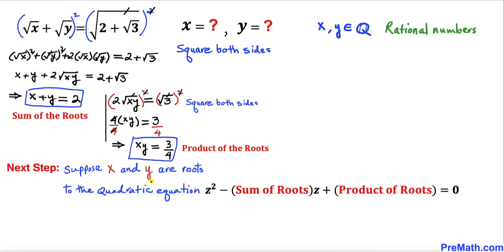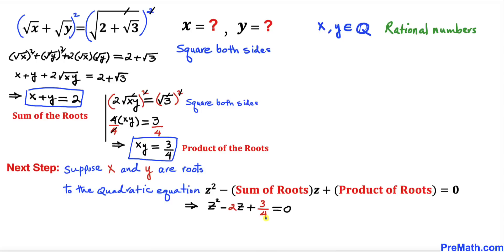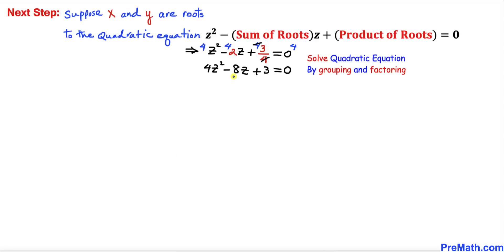Let's suppose that x and y are the roots to a quadratic equation, where the sum of the roots is 2 and the product of the roots is 3 over 4. Therefore our quadratic equation can be written as z² minus 2z plus 3/4 equals 0. Multiplying through by 4 to remove the fraction, we get 4z² minus 8z plus 3 equals 0.